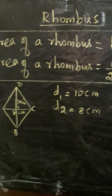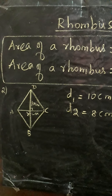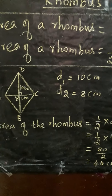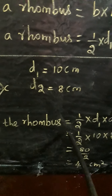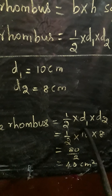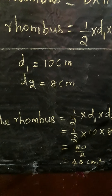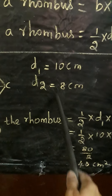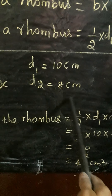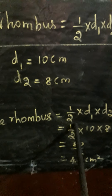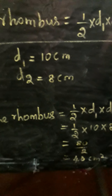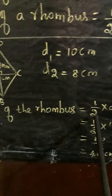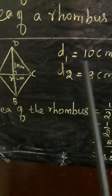We use this formula to find the area of the rhombus. Area of rhombus equals half into D1 into D2. Substitute D1 equals 10 and D2 equals 8. We get half into 10 into 8. 10 times 8 is 80. So 80 divided by 2 equals 40. Therefore 40 centimetres square is the area of the given rhombus.